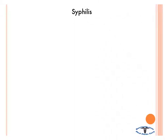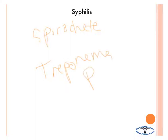So now we're going to talk a little bit about syphilis. Syphilis is a spirochete, and it's the species Treponema pallidum. The only way you can actually visualize this bacteria is by dark field microscopy.